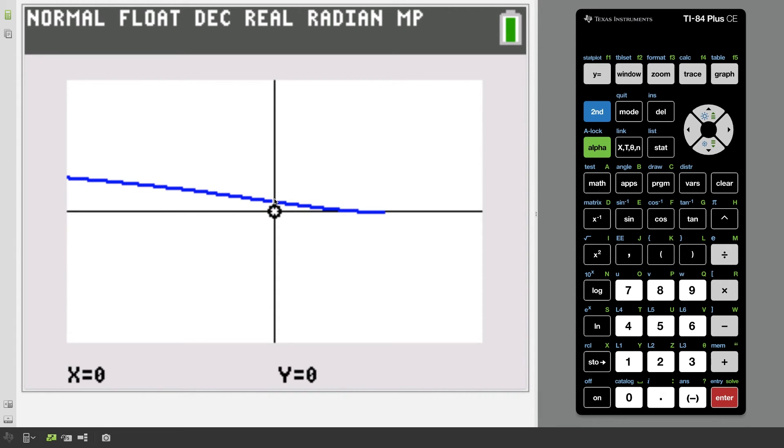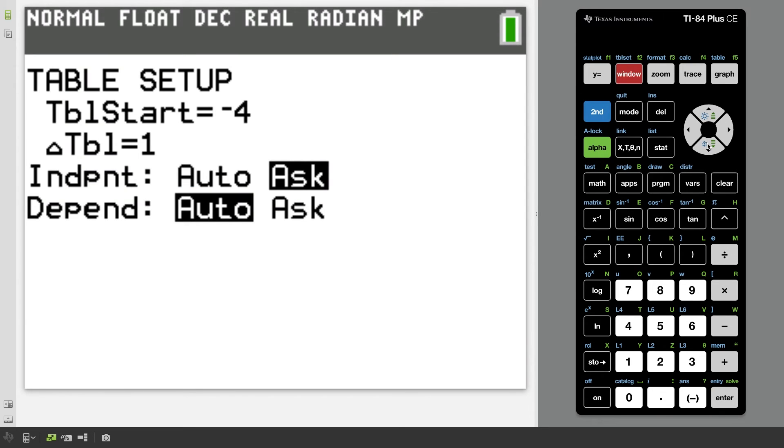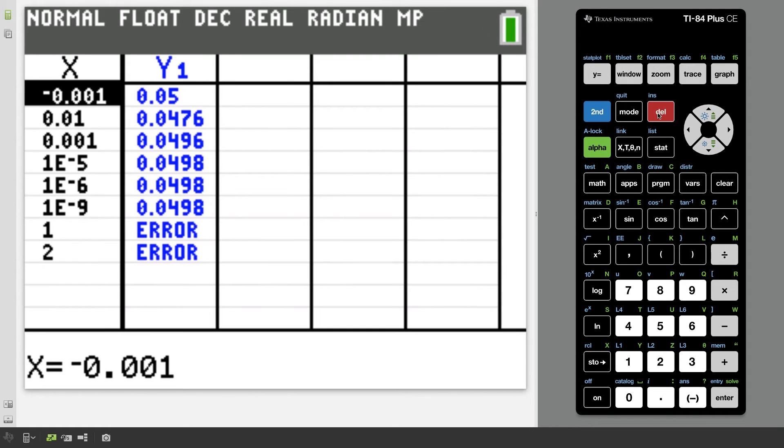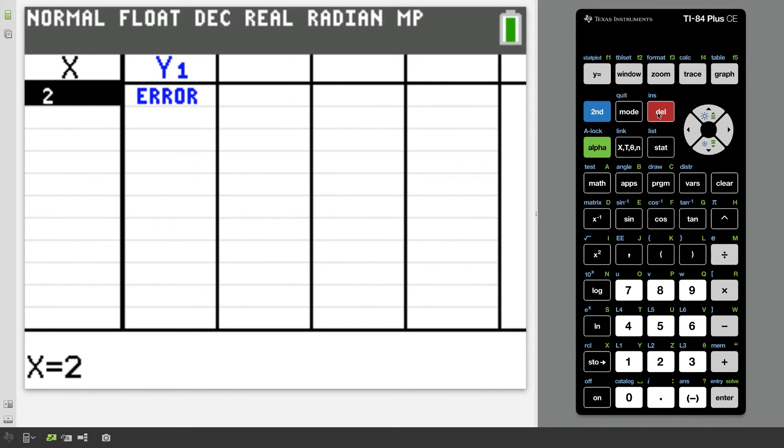and I'll zoom in once more and notice right at zero, the function is undefined, but it looks like the curve is heading towards a specific place. So one thing I could do is I could hit second window and I could switch the table from auto to ask. And I'll clear out whatever values are here, just so we could start from scratch.